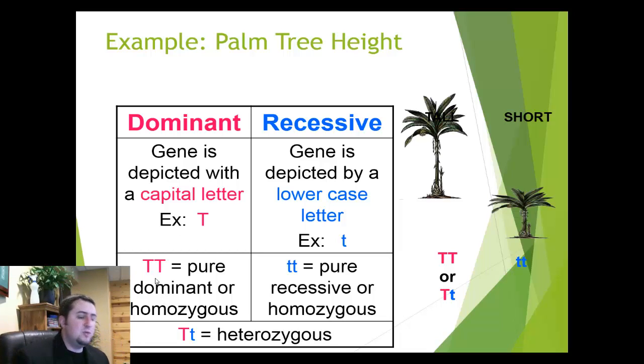Now you may have noticed that you can have a difference here. You can have big T, big T, or big T, little t, and both of those things will create a tall tree. So we, in science, make it a little bit more specific. If an organism is say big T, big T, we call that being pure dominant, or more specifically being homozygous dominant. Homo is a Latin word which means same. So each one of these alleles here is the same, thus making it homozygous dominant.